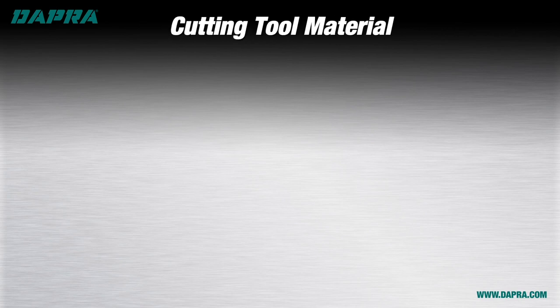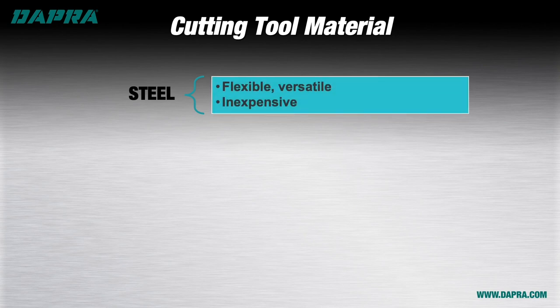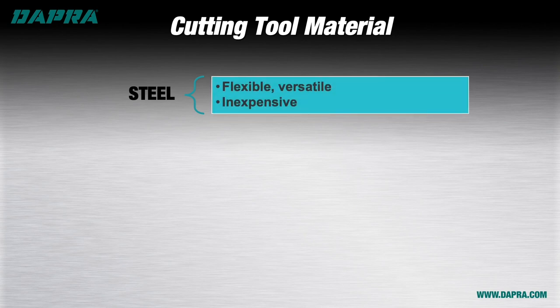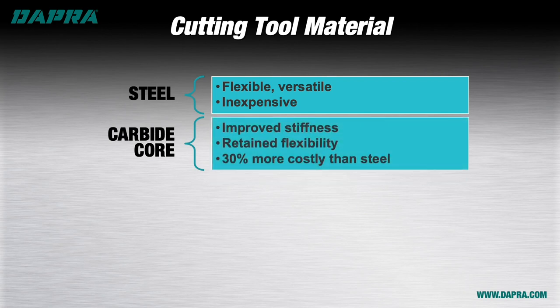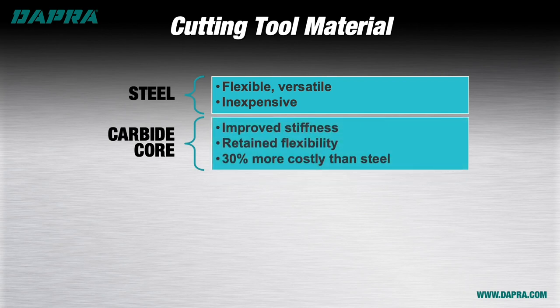Modern cutting tools come in various materials. The most common choice for indexable milling is a steel body, which is inexpensive and flexible — good for general roughing, but the flexibility can be a liability in long-reach applications. A carbide core tool is a good compromise, providing better resistance to deflection while maintaining the toughness required for roughing. Carbide core is somewhat more expensive than steel, but not significantly so.